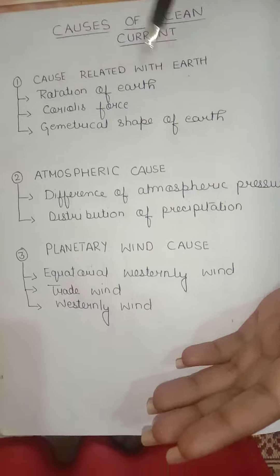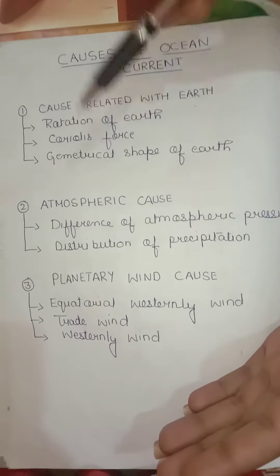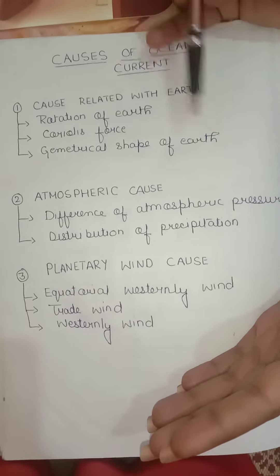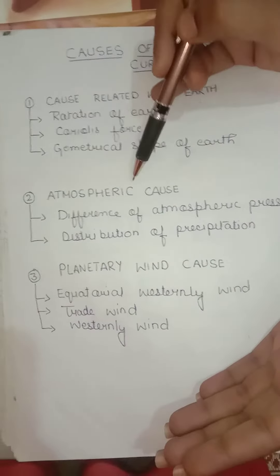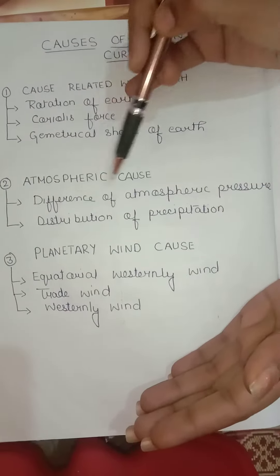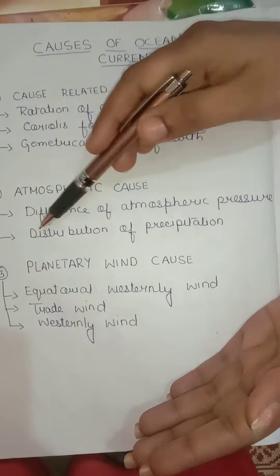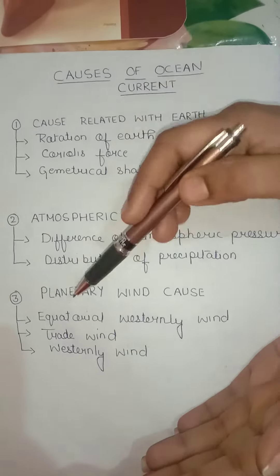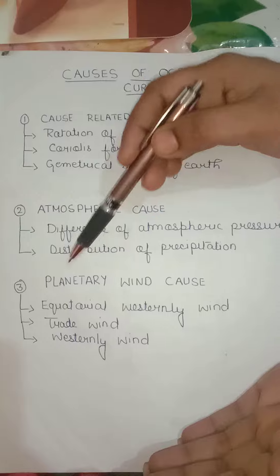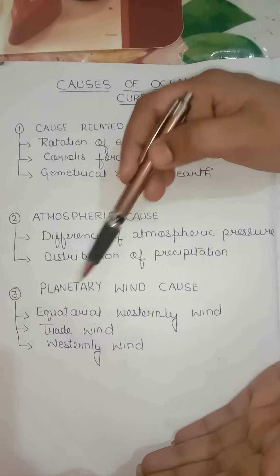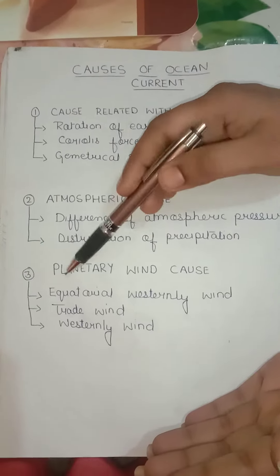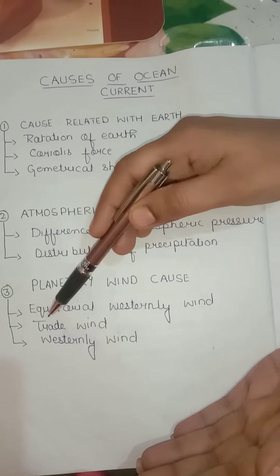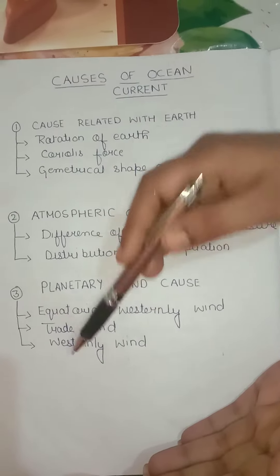The first cause is related to the Earth: rotation of the Earth, Coriolis force, and the geometrical shape of the Earth. The second cause is atmospheric: differences in atmospheric pressure and distribution of precipitation. The third cause is planetary winds: equatorial westerly wind, trade wind, and westerly wind.